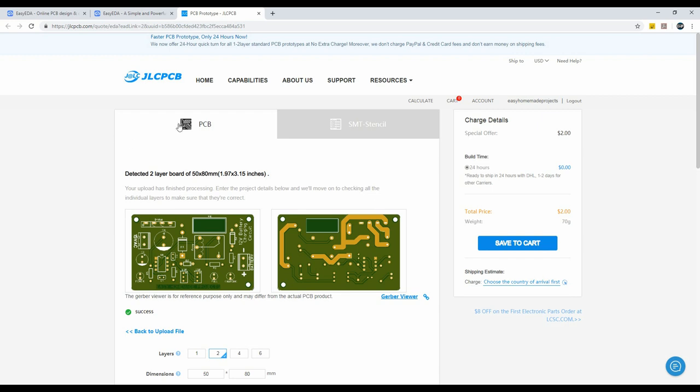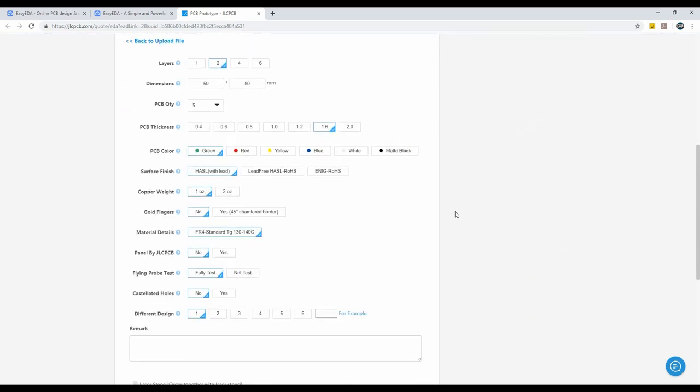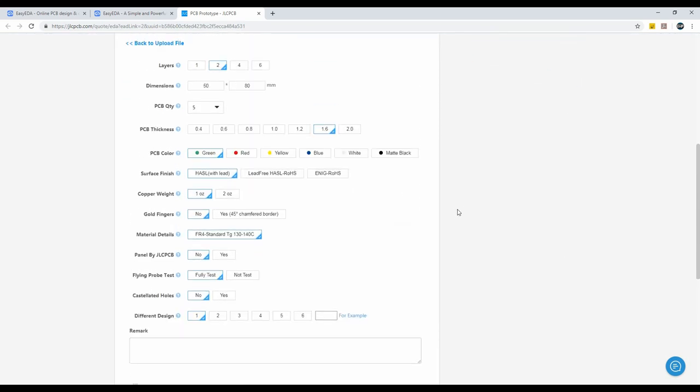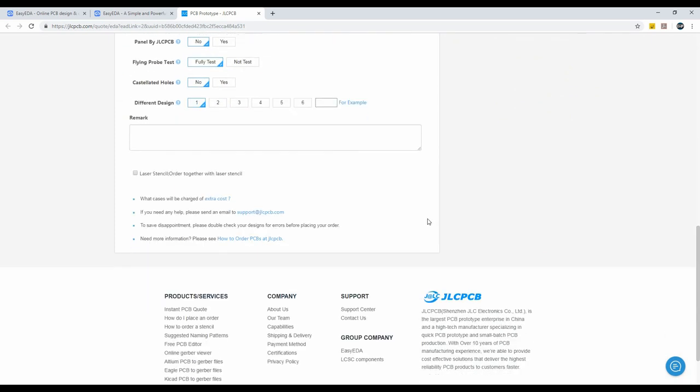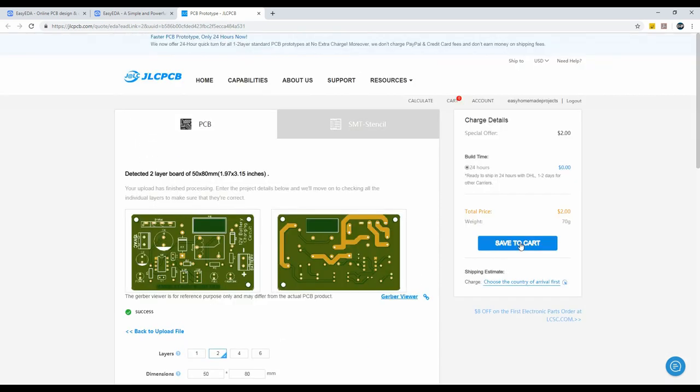To order your PCBs from jlcpcb.com, simply download Gerber files from video description and upload here. After uploading the Gerber files, you can change some PCB parameters from here. You can select any color from here for the same price, and then you can order your PCBs.